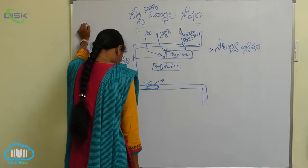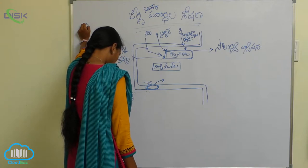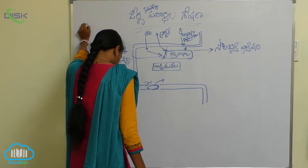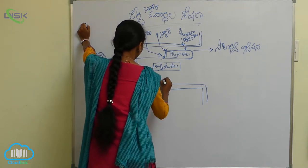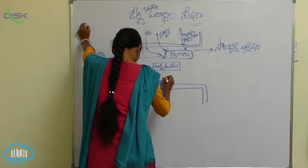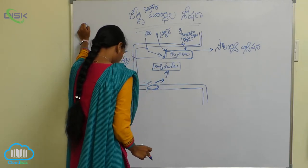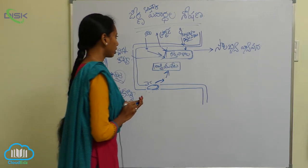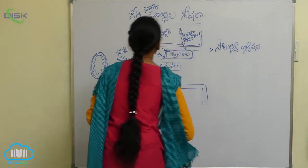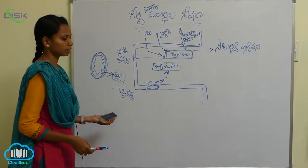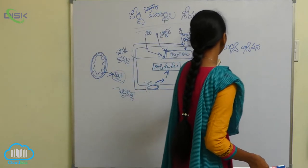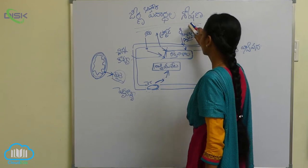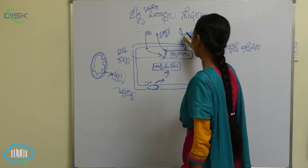After entering with epithelial coating, this is exocytosis. This coating is done in the lacteals. This process is done in the lacteals.